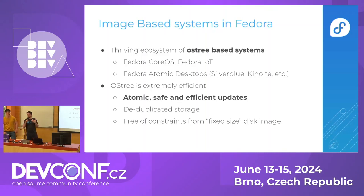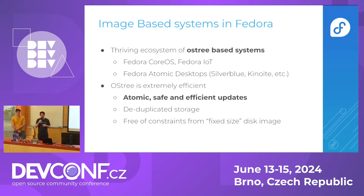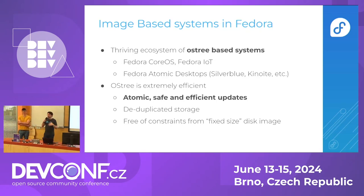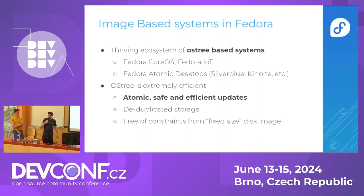In Fedora, we've been building image-based systems for a while now. Those image-based systems are based on OSTree as a technology. We have Fedora CoreS for the server use case, Fedora IoT for the embedded and edge use cases, and for all the desktop use cases we have the Fedora Atomic Desktops.